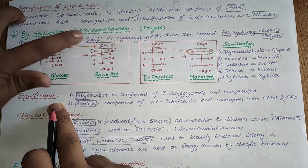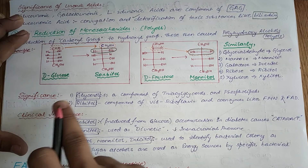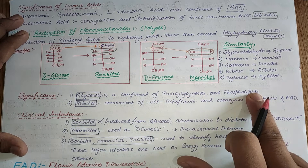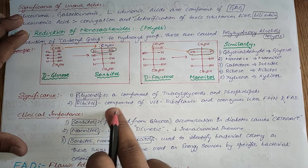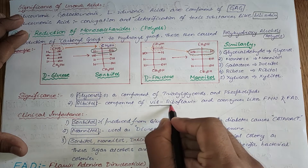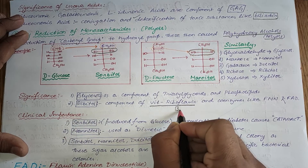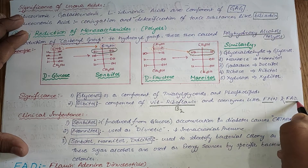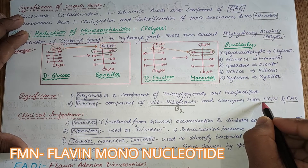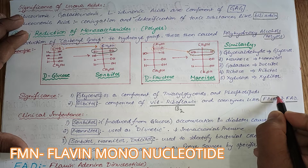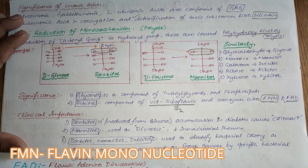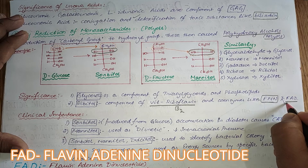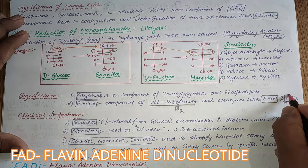The significance of reduction of monosaccharides: glycerol is a component of triacylglycerol and phospholipids. Ribitol is a component of vitamin riboflavin (vitamin B2) and coenzymes FMN (flavin mononucleotide, also known as riboflavin 5-phosphate) and FAD (flavin adenine dinucleotide).